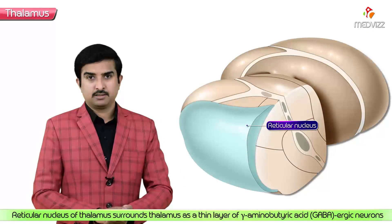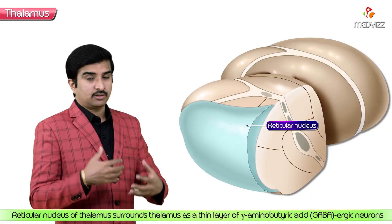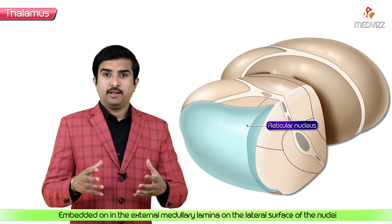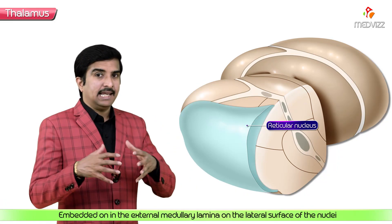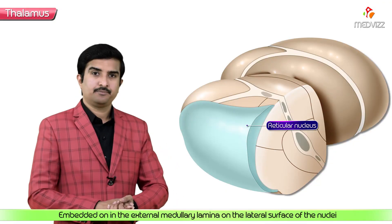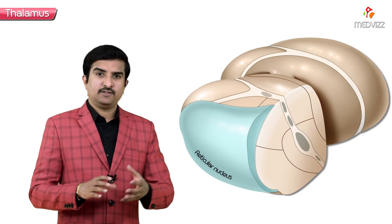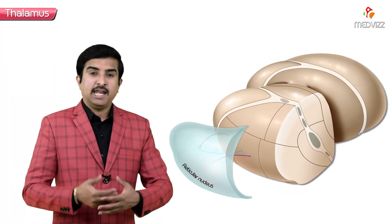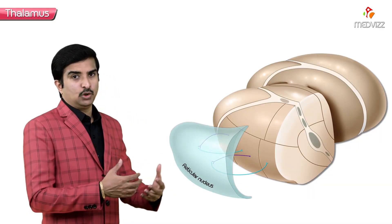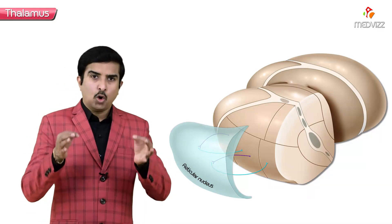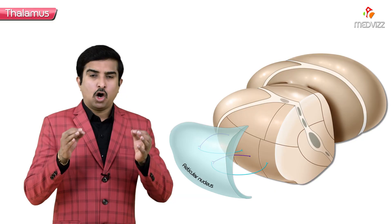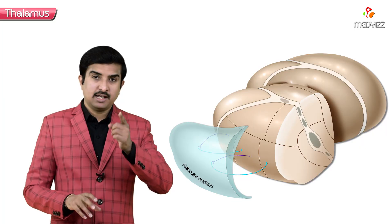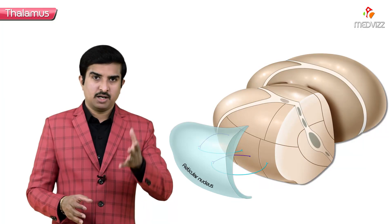The reticular nucleus of the thalamus surrounds the thalamus as a thin layer of GABAergic neurons embedded in the external medullary lamina on the lateral surface. The reticular nucleus mainly receives input from, and projects inhibitory output to, other thalamic nuclei. It is the only circuit that operates completely intra-thalamically, and it is inhibitory in nature — neurons are GABAergic.